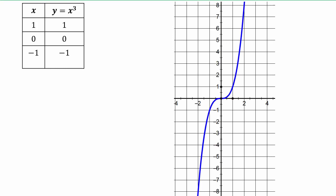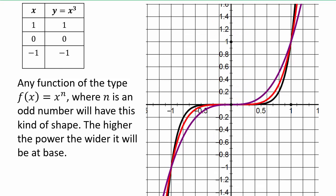Now let's look at x cubed. You already know its shape. Adding higher odd powers: the purple graph is x to the 3rd, the red graph is x to the 5th, and the black is x to the 7th. With odd power, a similar scenario — except when x goes to negative infinity, the graph shoots down to negative infinity, and as x goes to positive infinity, it shoots up. You can see that at negative 1, negative 1 and 1, 1, all these odd-power graphs intersect, just like even-power graphs intersected at 1,1 and negative 1,1.